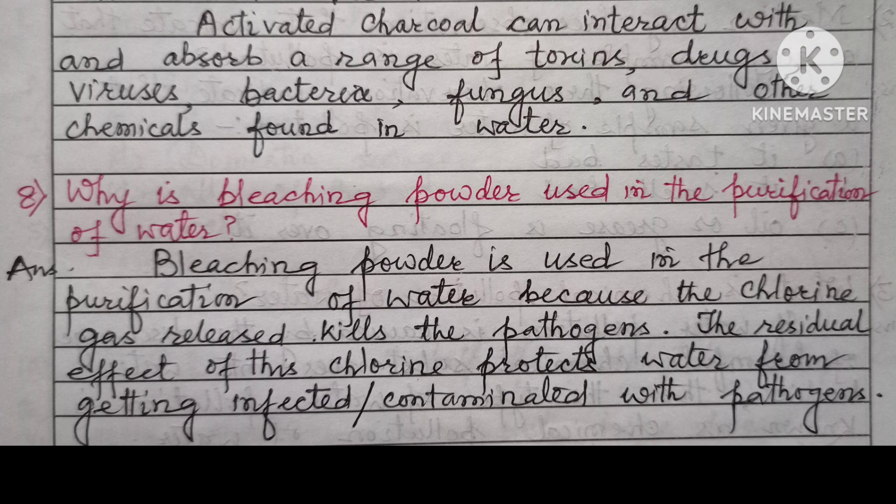Question 8: Why is bleaching powder used in the purification of water? Answer: Bleaching powder is used in the purification of water because the chlorine gas released kills the pathogens. The residual effect of this chlorine protects water from getting infected or contaminated with pathogens.